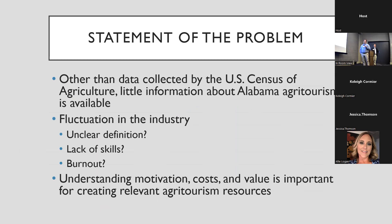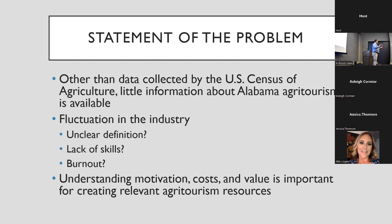When identifying the problem, most important are the middle factors: the fluctuation of the industry. Three components we felt really helped or hindered agritourism were an unclear definition — are producers clearly defining what agritourism is and operating under those nuances? Or is this a production farm that just has a small retail outlet? Setting identification and definition was important.